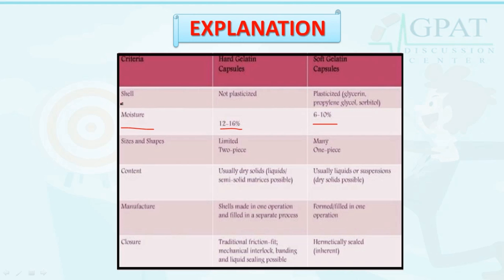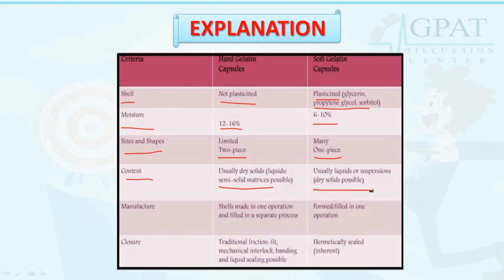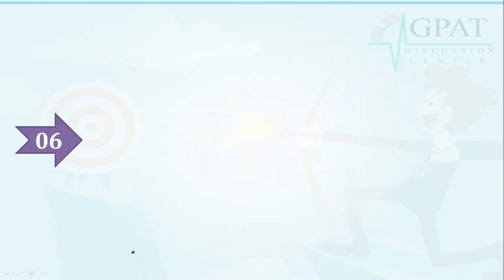Regarding the shell: hard gelatin capsules are not plasticized, while soft gelatin capsules are plasticized using glycerine, propylene glycol, or sorbitol. Hard gelatin capsules come in two pieces, while soft gelatin capsules are one piece. Content in hard gelatin capsules is usually dry solid or semi-solid, while soft gelatin capsules usually contain liquid or suspension. Hard gelatin capsule shells are made in one operation and filled separately, while soft gelatin capsules are formed and filled in one operation.